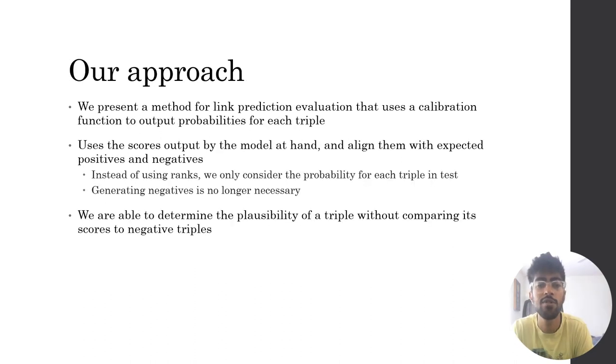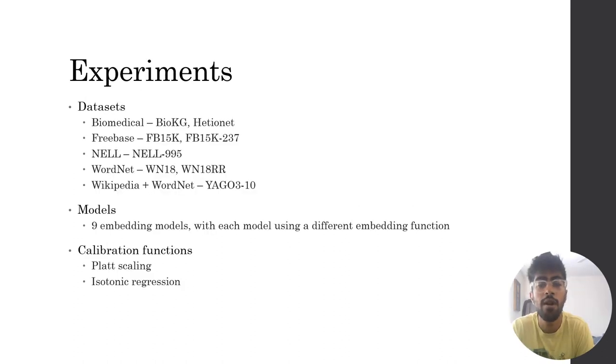In our approach, we present a method for link prediction evaluation that uses a calibration function to output probabilities for each triple. It uses the score output by the model at hand and aligns them with the expected positives and negatives. Instead of using ranks, we only consider the probability for each triple in test. Finally, we are able to determine the plausibility of a triple without comparing its score to negative triples.